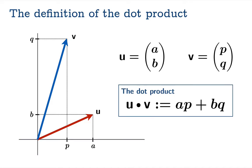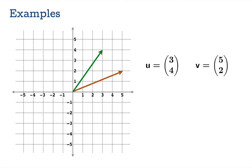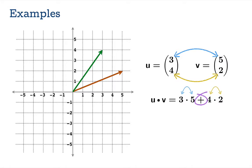That is our definition of the dot product. Right off the bat we have no reason to believe this is even an interesting thing to have in hand, but it is very interesting. So let's make sure we know how to calculate it. Suppose you have the vector (3, 4) and the vector (5, 2). The dot product is 3 times 5 plus 4 times 2 — like components multiplied and summed — which gives 23.